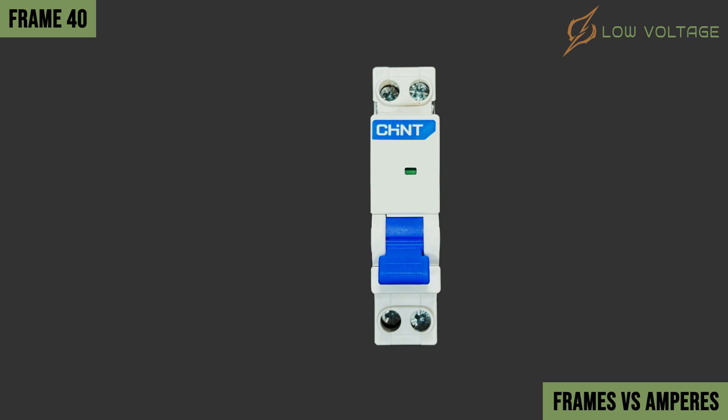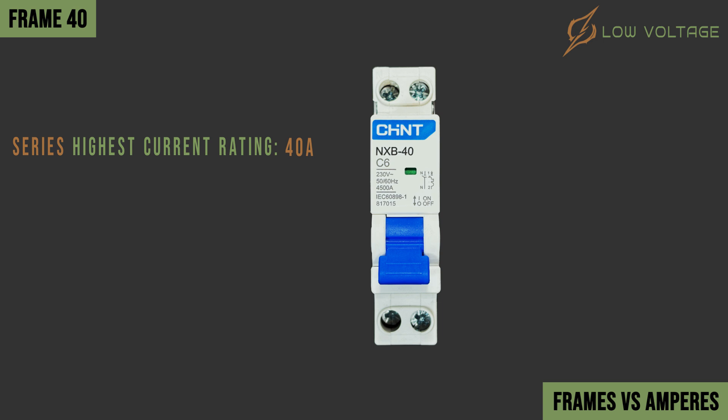Let's start with Frame 40. Manufacturers refer the frame to either a number or a series code and print it on the MCB. In this particular case, the printed frame is 40. This indicates that the highest current rating in this MCB series is 40 amperes. All breakers have a printed current rating to determine its protection characteristics — this breaker has a current rating of 6 amperes. Another example within the same 40 amperes frame but with a different rating: this MCB has a current rating of 40 amperes.